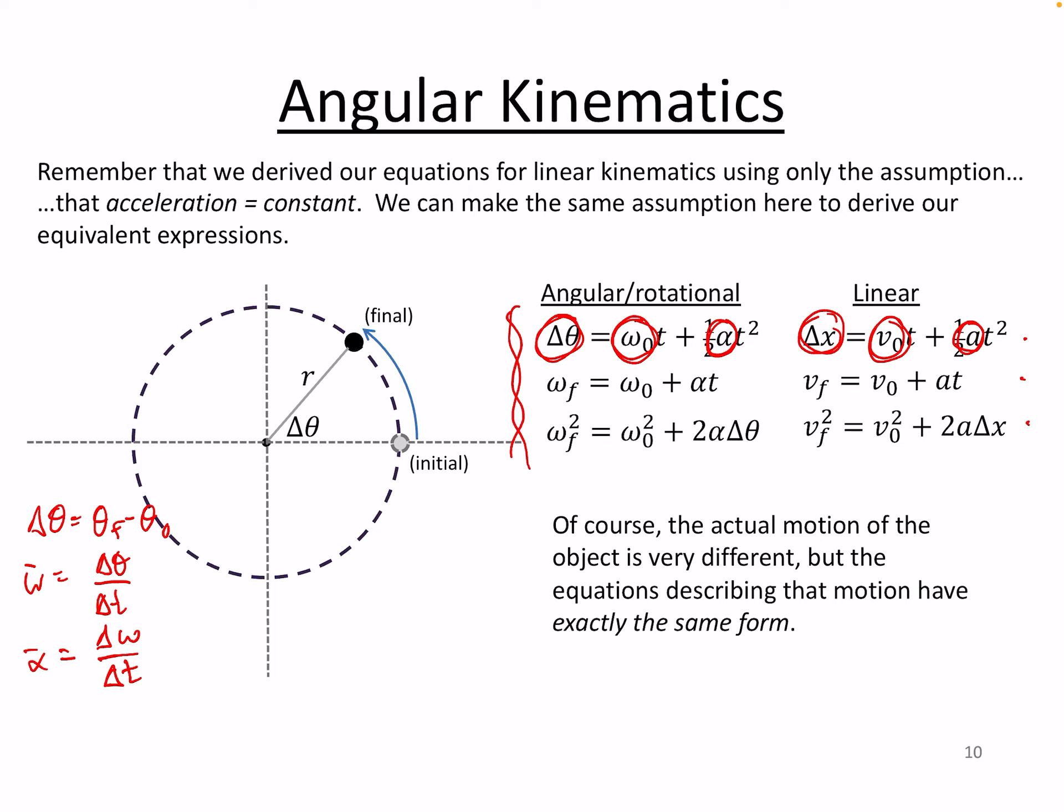Now, the actual motion of the object, obviously, is very different, right? You're going around and around and around, sort of the cyclical nature. You're never actually going anywhere, potentially.